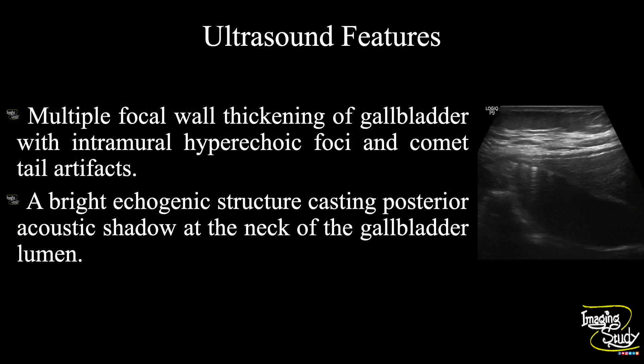So in summary, multiple areas of focal gallbladder wall thickening with intramural hyperechoic foci casting comet tail artifacts are noted, indicating adenomyomatosis of the gallbladder. A bright echogenic structure casting posterior acoustic shadow is seen at the neck of the gallbladder lumen, indicating cholelithiasis.